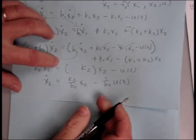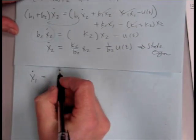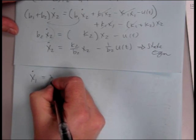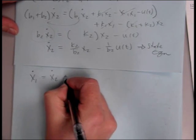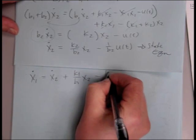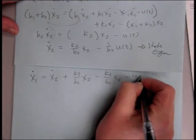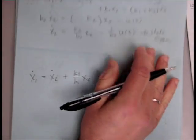So let's go ahead and solve this as a state equation. x2 dot is equal to k2 over b2 x2 minus 1 over b2 u. Okay, so this is our state equation. x1 dot is equal to, dividing through by b1, x2 dot plus k1 over b1 x2 minus k1 over b1 x1 minus u of t.